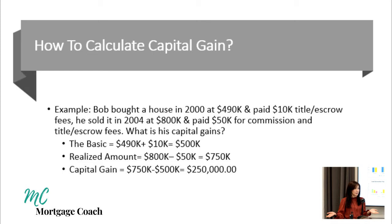Remember, there is a tax exemption for homeowners. Bob lived in the home for more than two years, so as a single individual filing taxes, he gets a $250,000 exemption on capital gains tax. Since he owned the property by himself and filed individually, his entire $250,000 capital gain is exempt — so he paid nothing in capital gains tax. The main purpose of this example was to learn the basis, which in this case is $500,000.